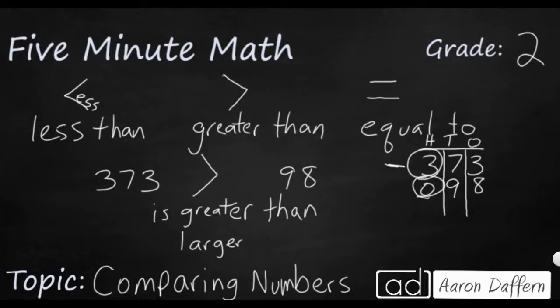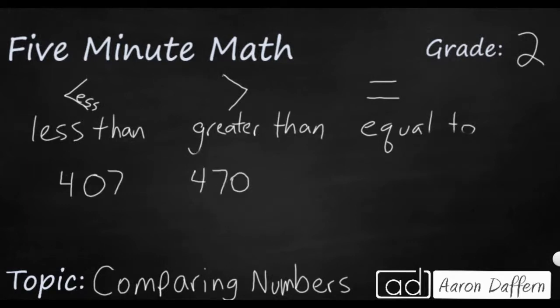Let's look at a different example. Now we have two new numbers, 407 and 470. As you can tell, they each use the same three digits: four, seven, and zero. They just kind of mix up where the zero and the seven goes. How can we compare these two numbers?